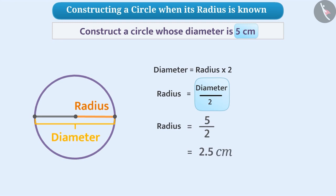Therefore, whenever there is a question to construct a circle, it is important to note whether the measurement provided is of the radius or the diameter. Now, you will be able to draw a circle if you know the length of the radius.